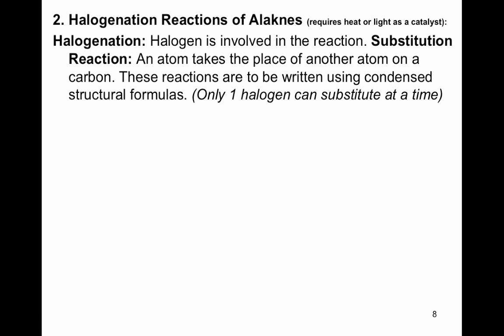The second reaction alkanes undergo is the halogenation reaction — halogenation simply means a halogen is reacting with the alkane. The halogens are the second-to-last column on the periodic table: fluorine, chlorine, bromine, and iodine. This reaction requires heat or light as a catalyst, so you must write heat or light over the arrow. It is a substitution reaction, meaning an atom takes the place of another atom on a carbon. These reactions must be written using condensed structural formulas — only combustion reactions use molecular formula.